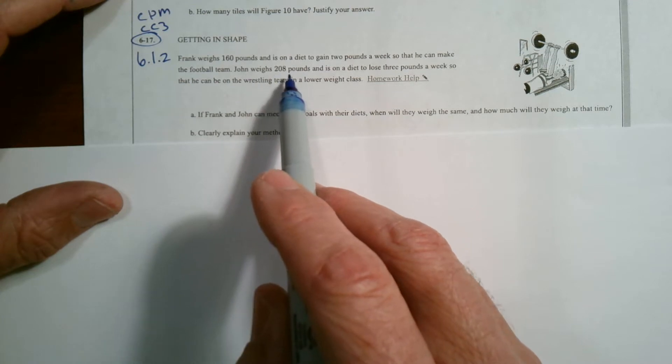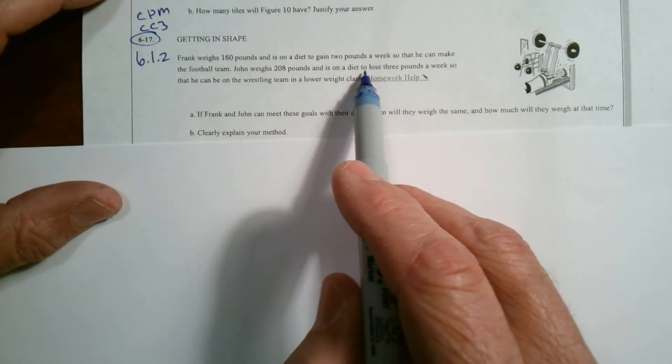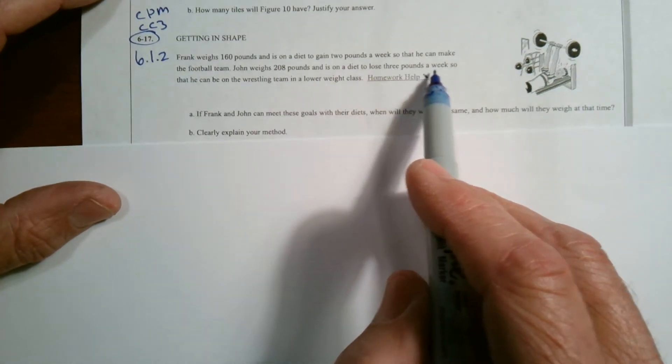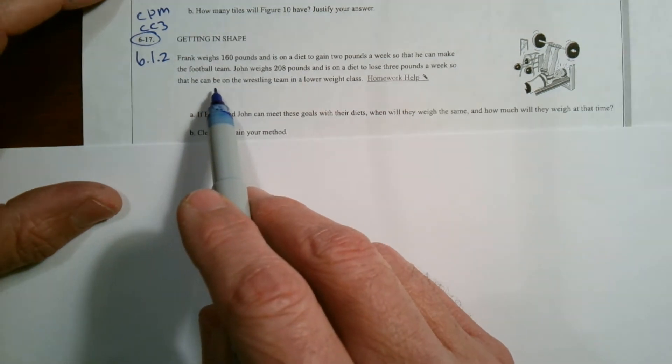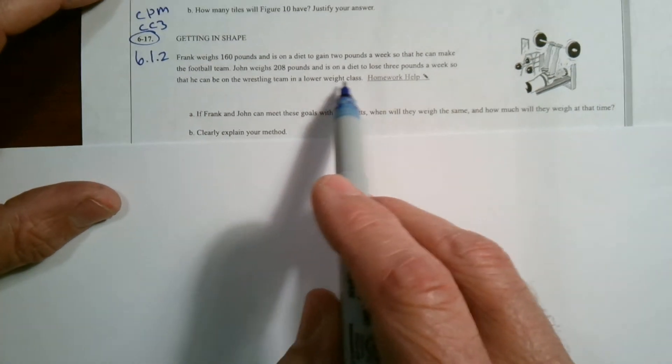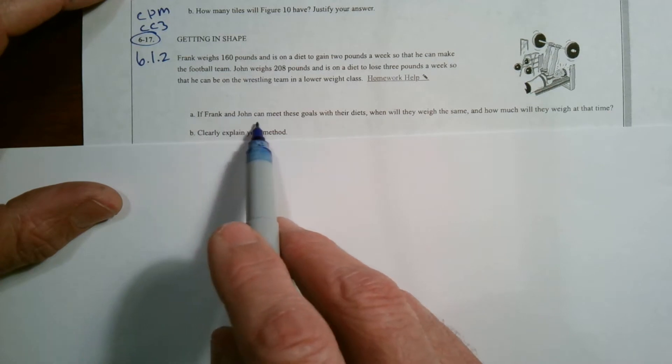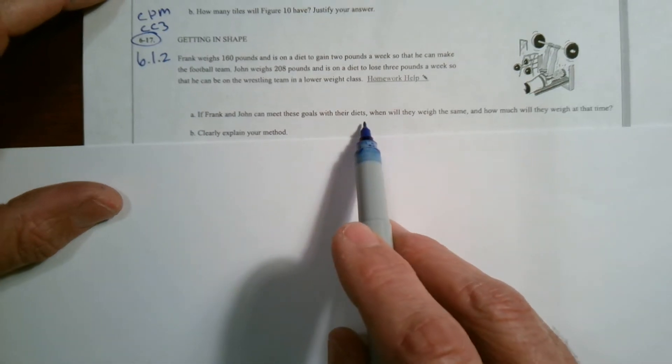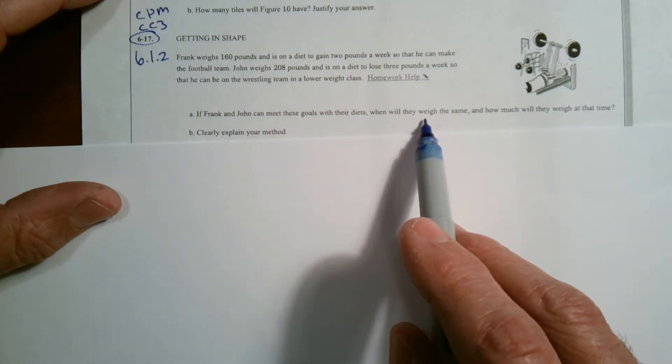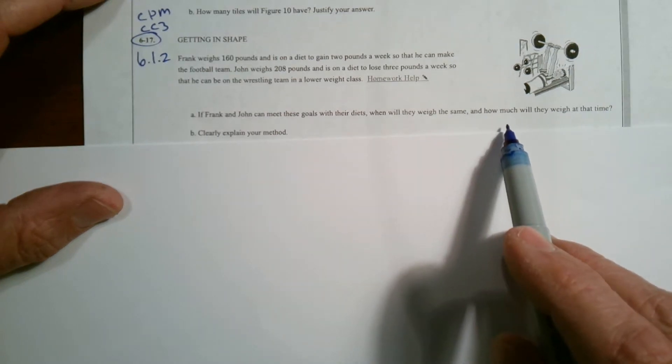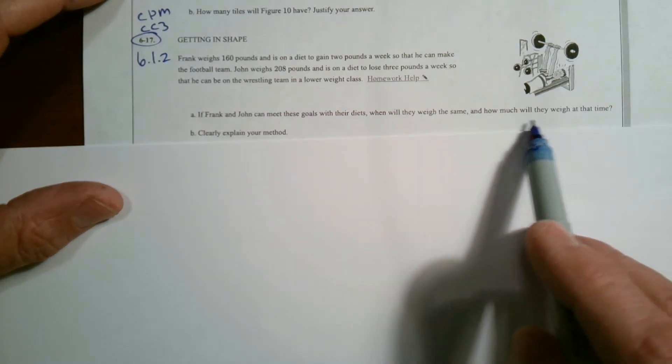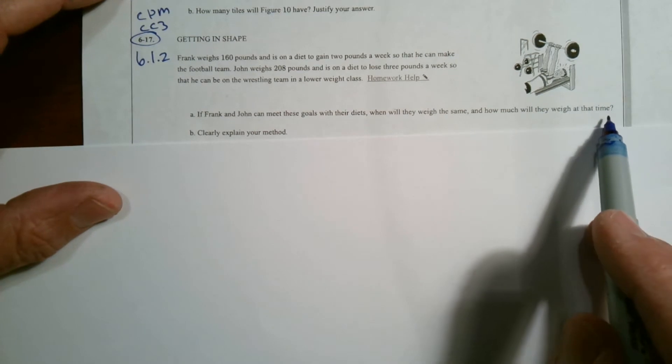John weighs 208 pounds and is on a diet to lose three pounds a week so he can be on the wrestling team in a lower weight class. So it says if Frank and John can meet these goals with their diets, when will they weigh the same and how much will they weigh at that time?